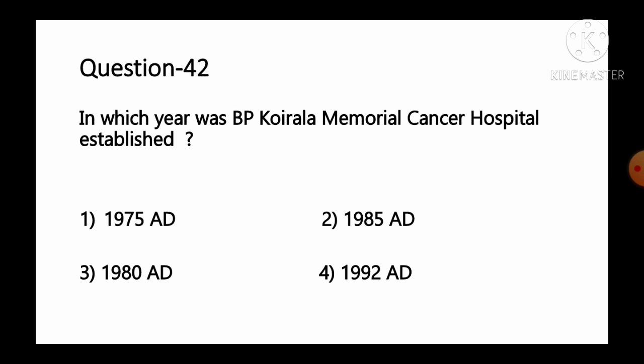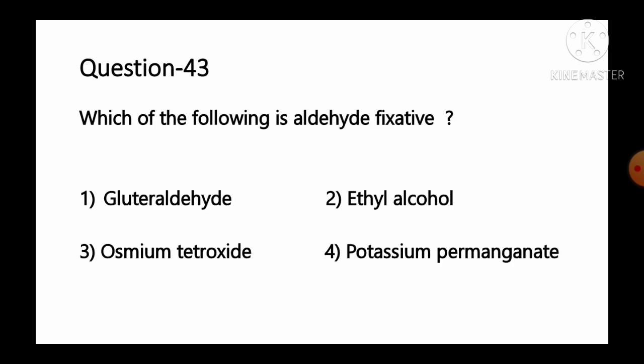Question number 42: In which year was BP Koirala Memorial Cancer Hospital established? Options: 1 1975, 2 1985, 3 1980, 4 1992. The correct answer is that it was established in the year 1992. So option number 4 is the correct answer.